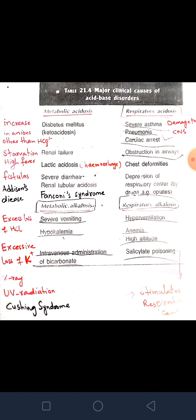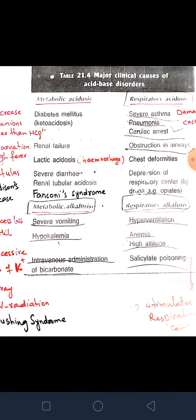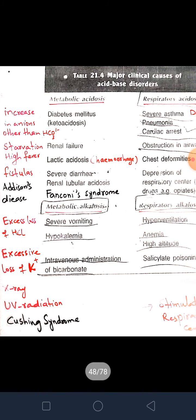Severe diarrhea is a direct cause of loss of bicarbonate ions from the body, so diarrhea directly leads to metabolic acidosis. Renal tubular acidosis involves a tubular defect — an inability to reabsorb bicarbonate ions by the kidney tubules. When there is less reabsorption of bicarbonate ions it leads to metabolic acidosis, and this condition is known as Fanconi syndrome.